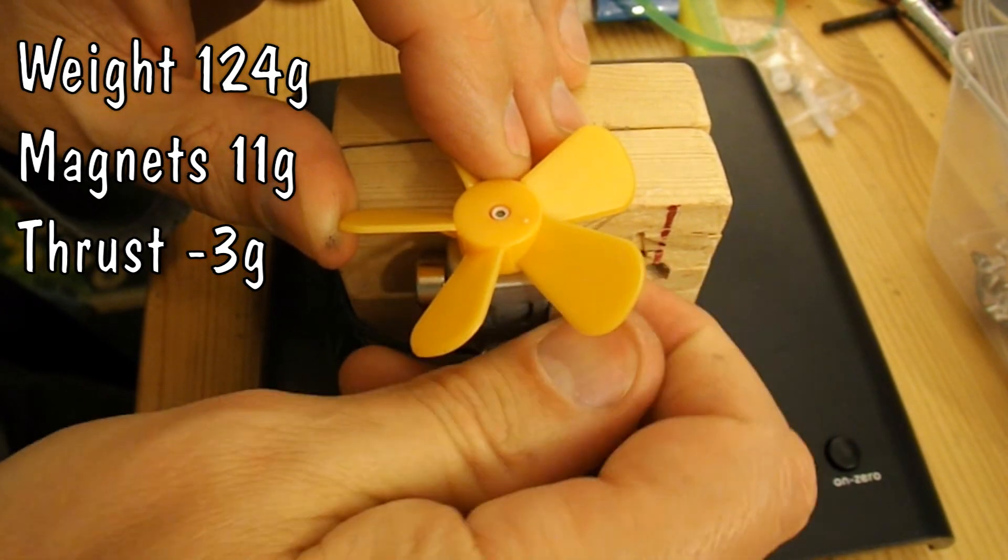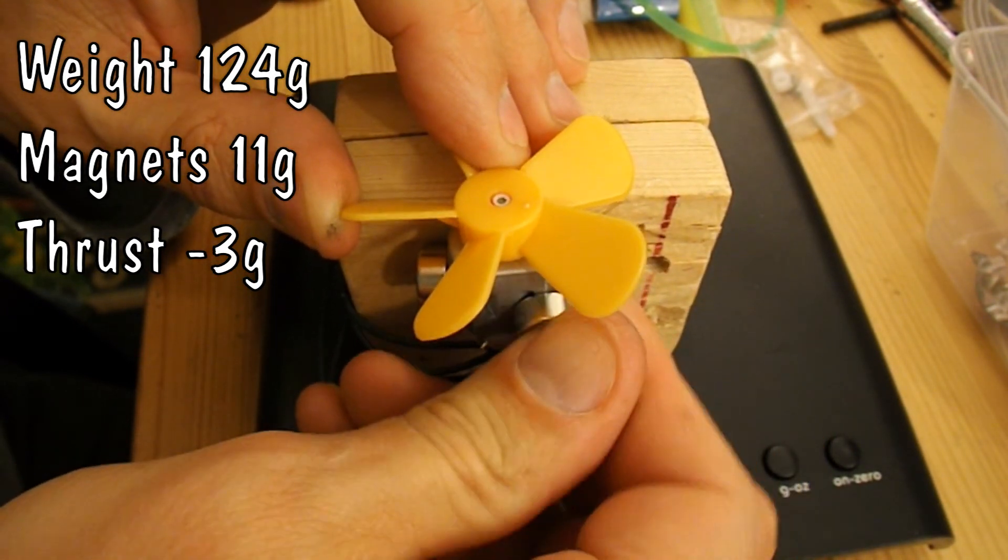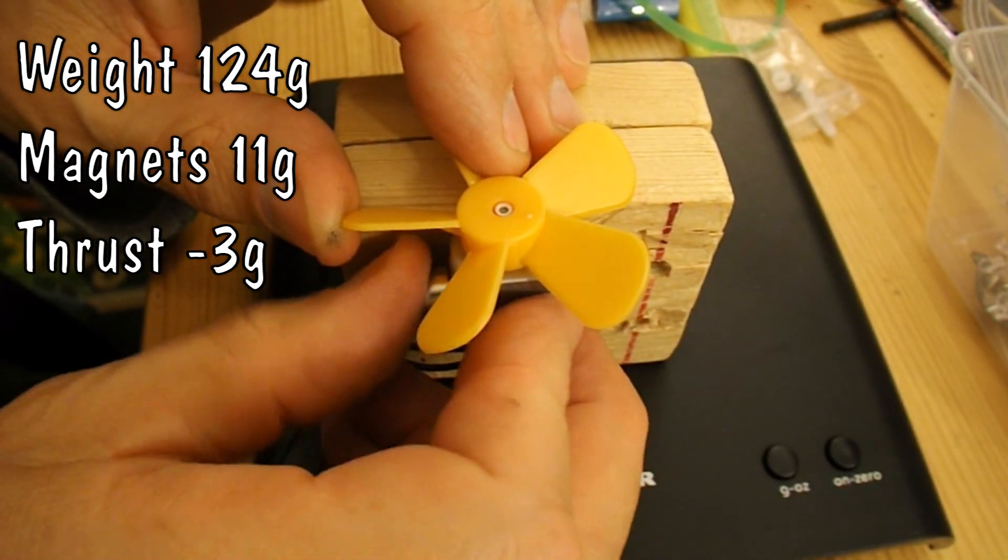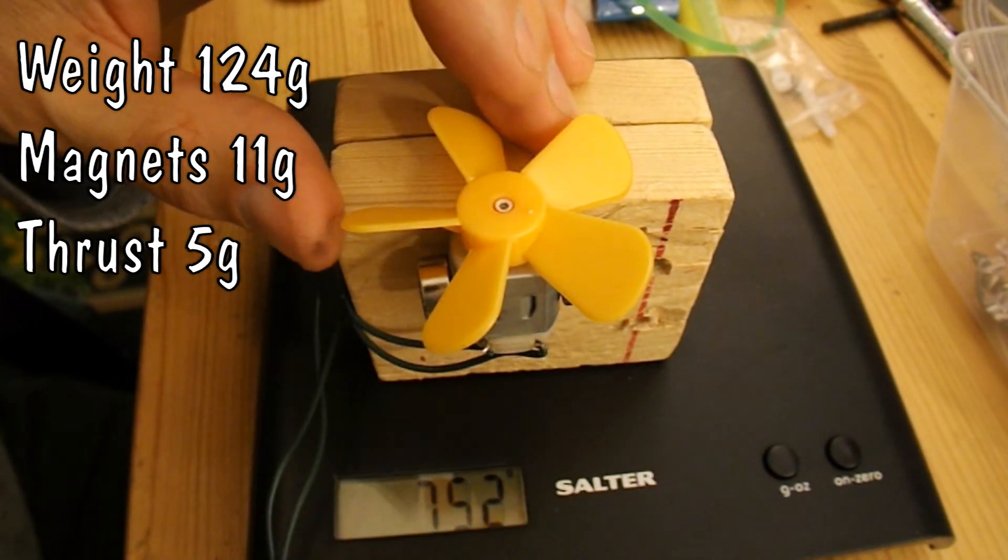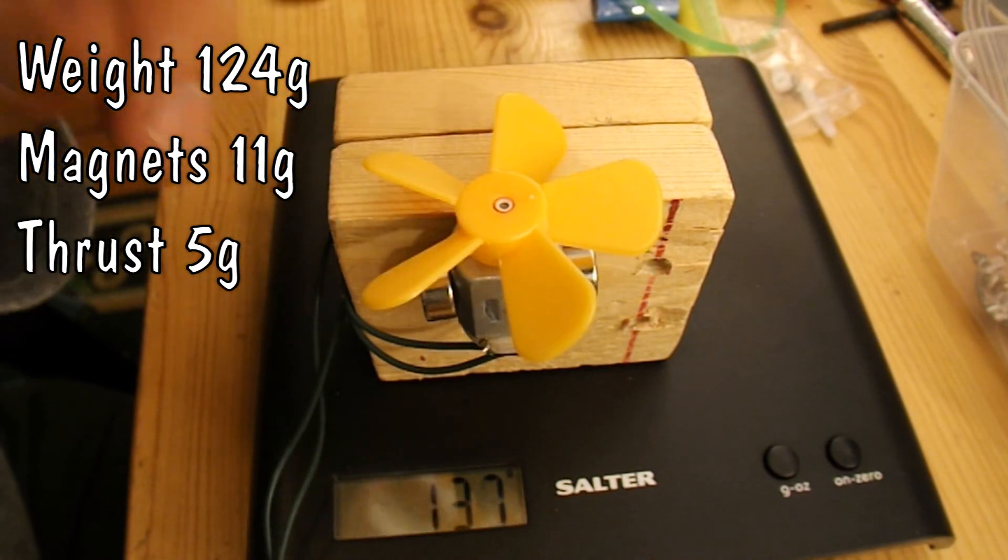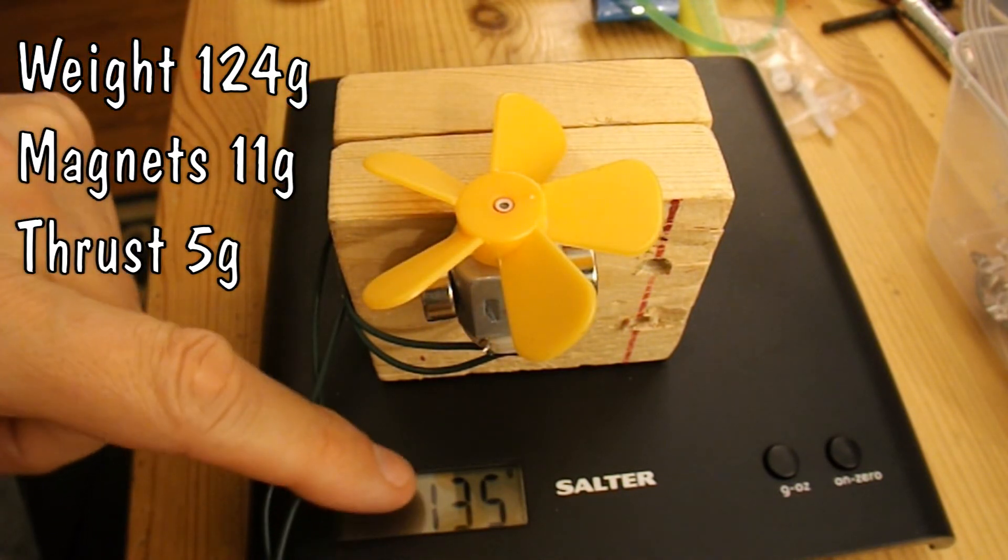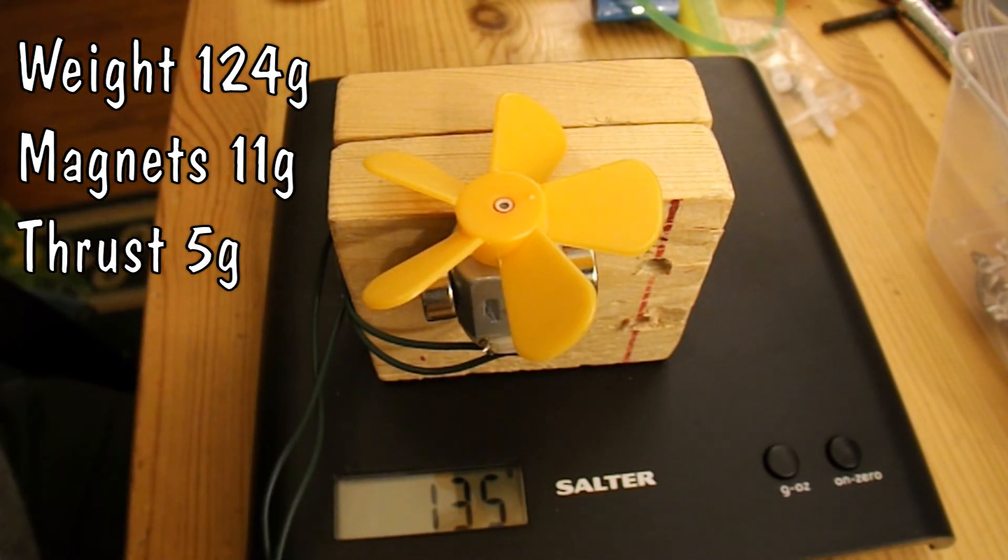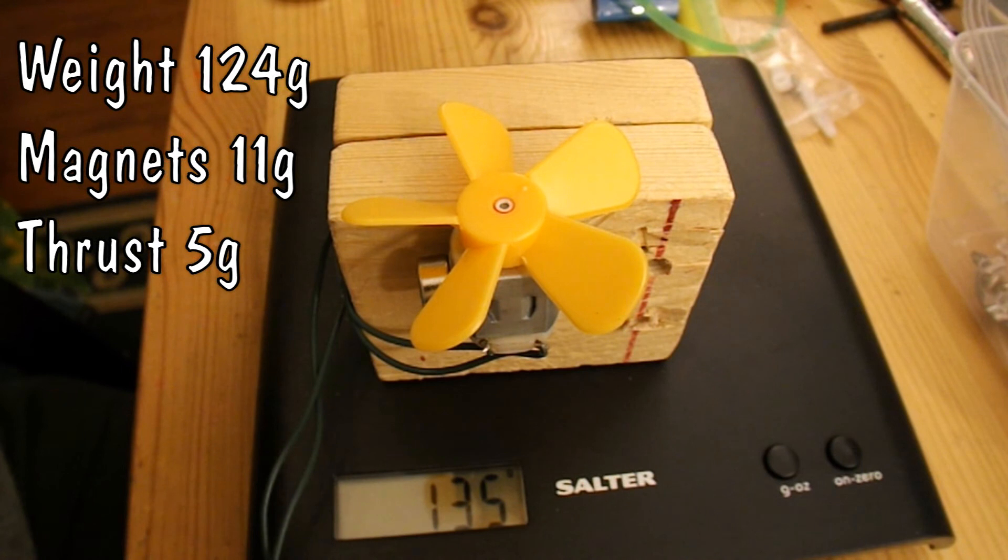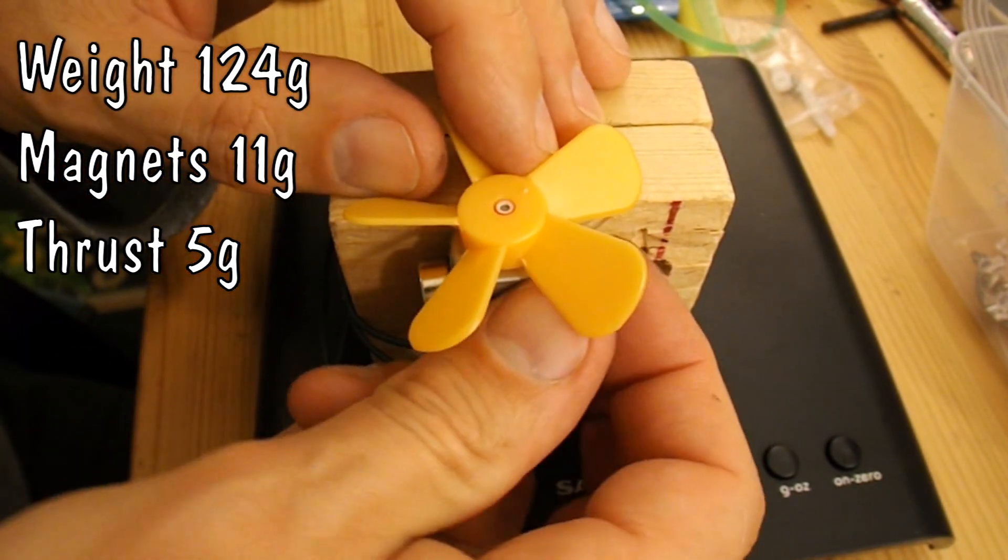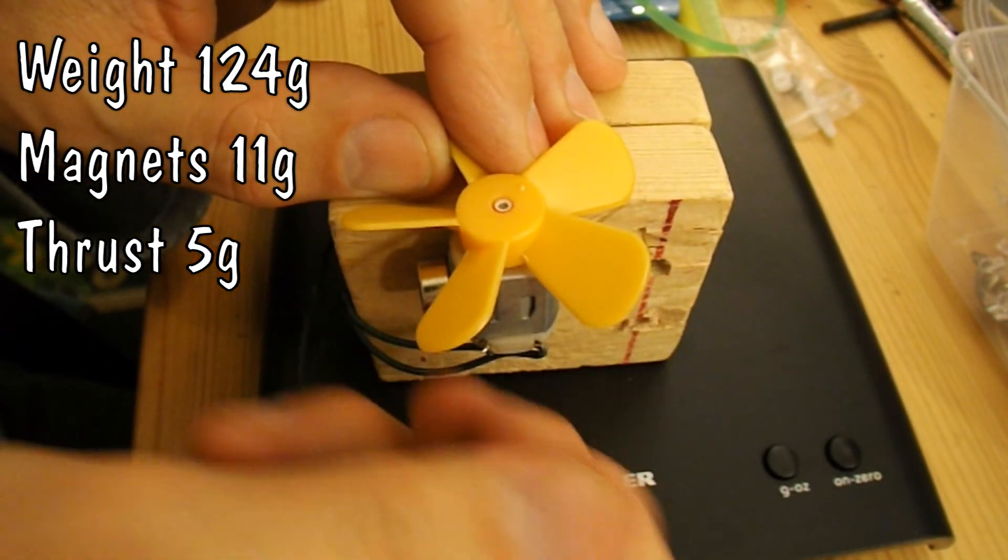So yes, putting magnets on the outside does increase the thrust, if you get it right. So 135, 140. 5g of thrust compared to 3g without the magnets.